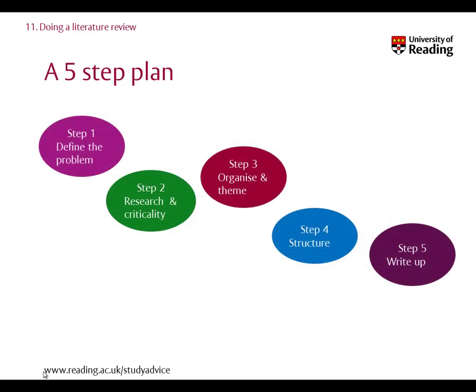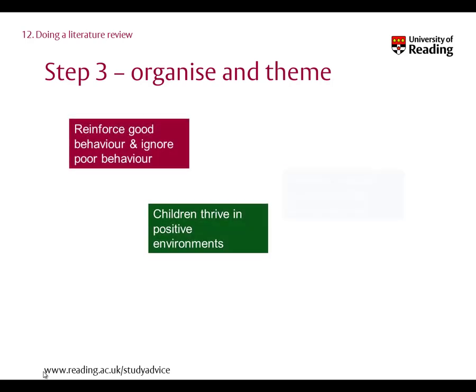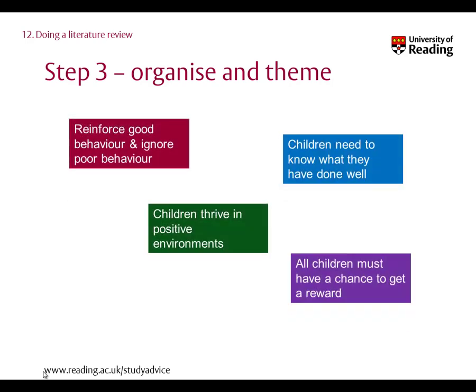Step 3: Organise and theme. A literature review is not simply a list of all the research you've found, but is written in themes. Hopefully, you will have spotted a number of themes if you've been reading and taking notes from your research. These themes can provide headings within your review. In my original example, I may have noticed these emerging themes through my reading. You will need to be selective here and discount some articles that don't fit into your major themes.